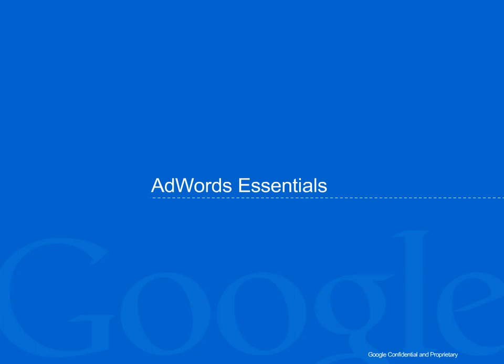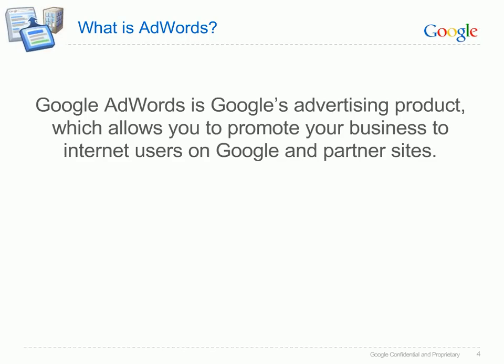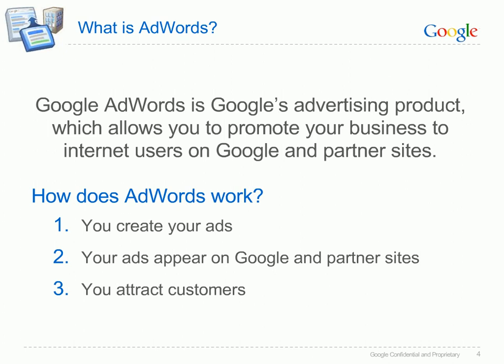The AdWords essentials — a few things you should know before you create your account. So, what is AdWords? AdWords is Google's advertising product, which allows businesses large and small to promote their products and services on Google and our partner network. You create your ads and choose keywords, which are words or phrases related to your business. Then your ads appear on Google and partner sites when people search using one of your keywords, so you're advertising to an audience that's already interested in what you have to offer.